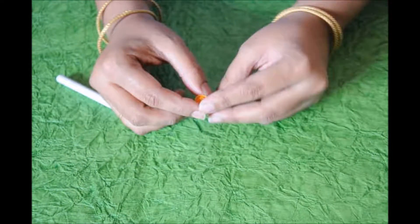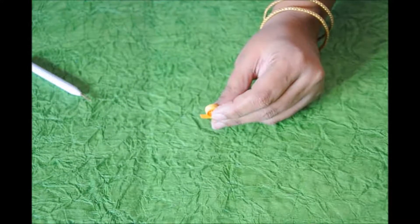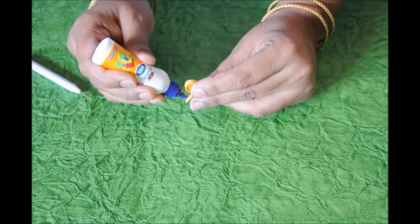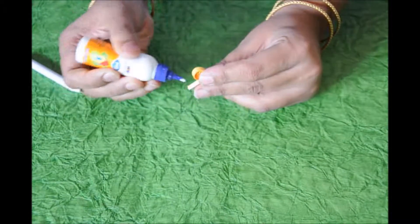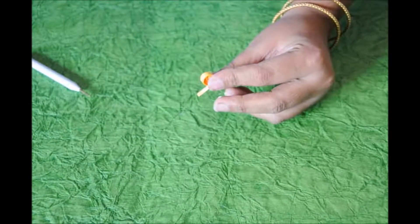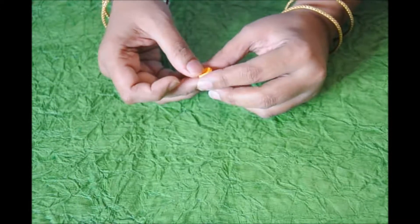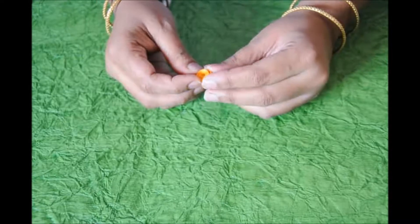Loosen it at the end nicely and glue it at the end. The beautiful small, nice, cute round is ready.